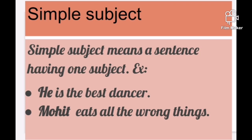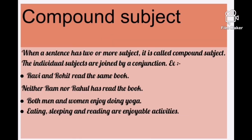A simple subject means the subject is a single word or single person. A compound subject is when a sentence has more than one subject — more than one person performing the action. For example: 'Ravi and Rohit read the same book' — both Ravi and Rohit are doing the action, so this is a compound subject. 'Neither Ram nor Rohit read the book' — both Ram and Rohit form a compound subject.